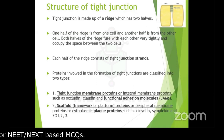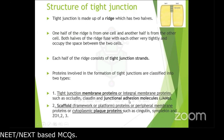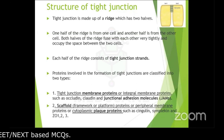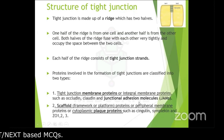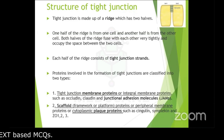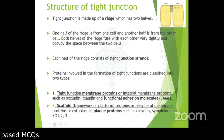These ridges are made up of two types of proteins: integral membrane proteins and peripheral membrane proteins. The integral membrane proteins — also called tight junction membrane proteins — include occludin, claudin, and junctional adhesion molecules (JAMs). The peripheral membrane proteins include cingulin, symplekin, and ZO-1, ZO-2, and ZO-3.